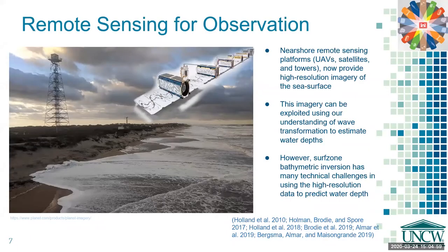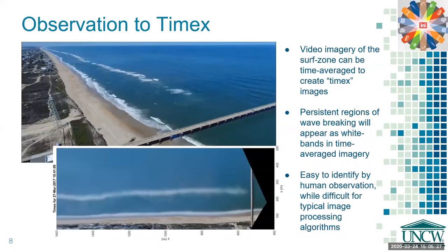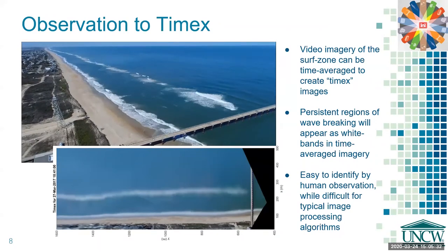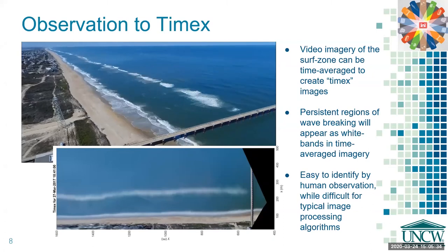Near shore remote sensing platforms such as UAVs, satellites, and towers now provide high resolution imagery of the sea surface. This imagery can be exploited by using our understanding of wave transformation and breaking to estimate water depths. However, the surf zone bathymetric inversion process has many technical challenges in using this high resolution data to predict water depth. One of the techniques in converting this high resolution imagery into information useful to bathymetric conversion is to create time-average images of the surf zone.